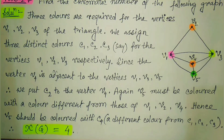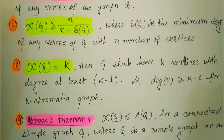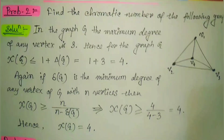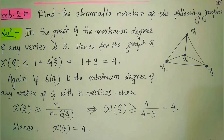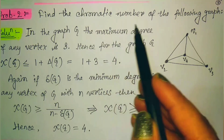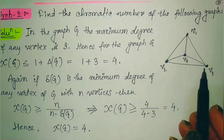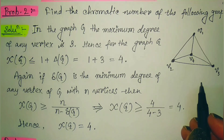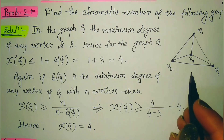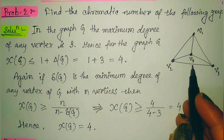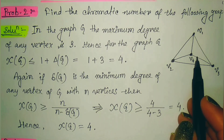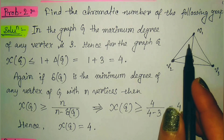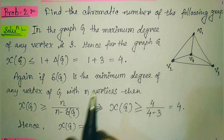In the next problem we apply the theorems. The second problem is again: find the chromatic number of the following graph. We observe the graph very carefully and find that each vertex has degree three — all the vertices are of degree three.